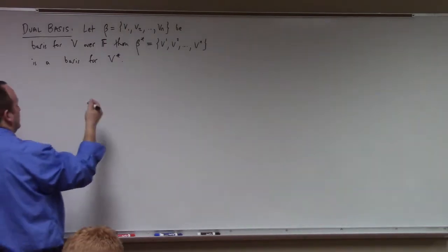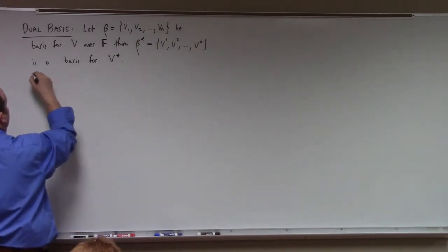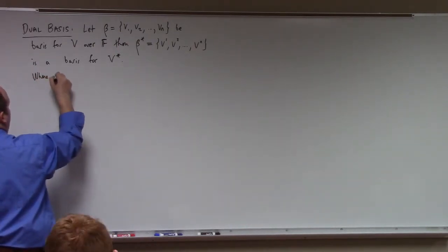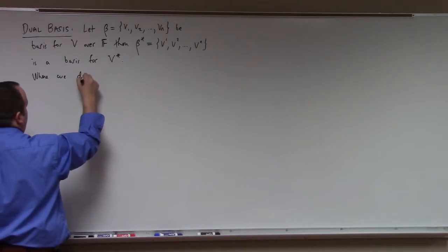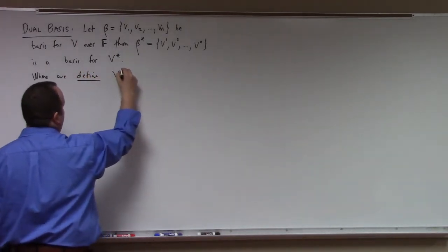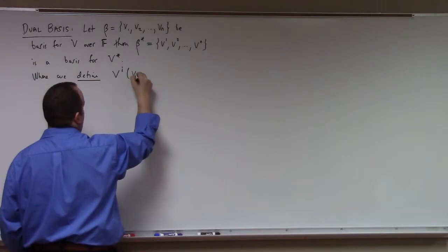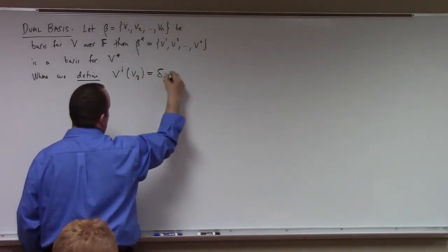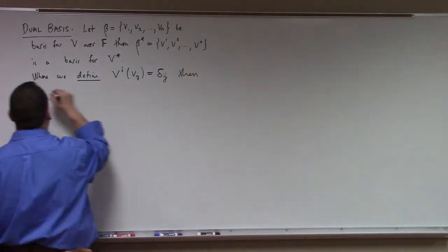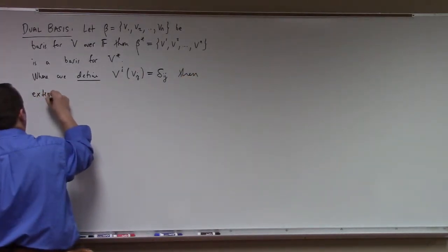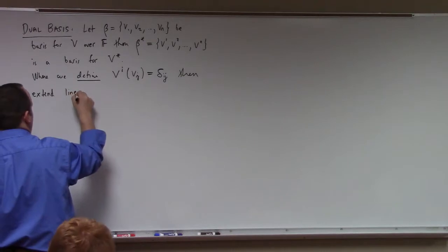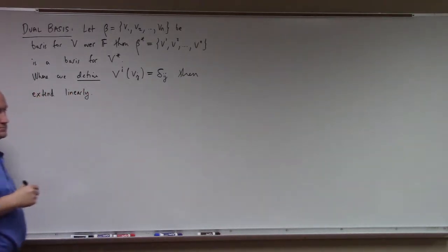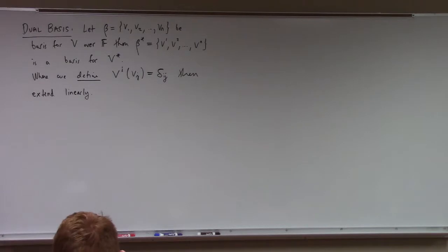We define v^i acting on v_j to be the Kronecker delta δᵢⱼ, then extend linearly. This is the so-called dual basis.